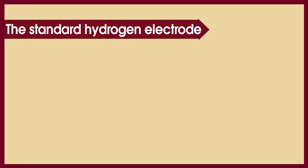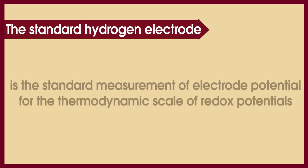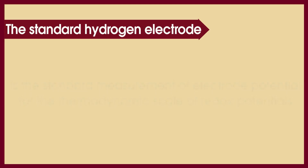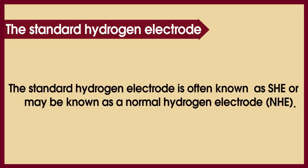All of this was an introduction to our subject: the standard or normal hydrogen electrode. The definition of the standard or normal hydrogen electrode is the standard measurement of electrode potential for the thermodynamic scale of redox potential. In the electrochemical series, the potential of the standard hydrogen electrode is equal to zero, and it sits in the middle of the series.